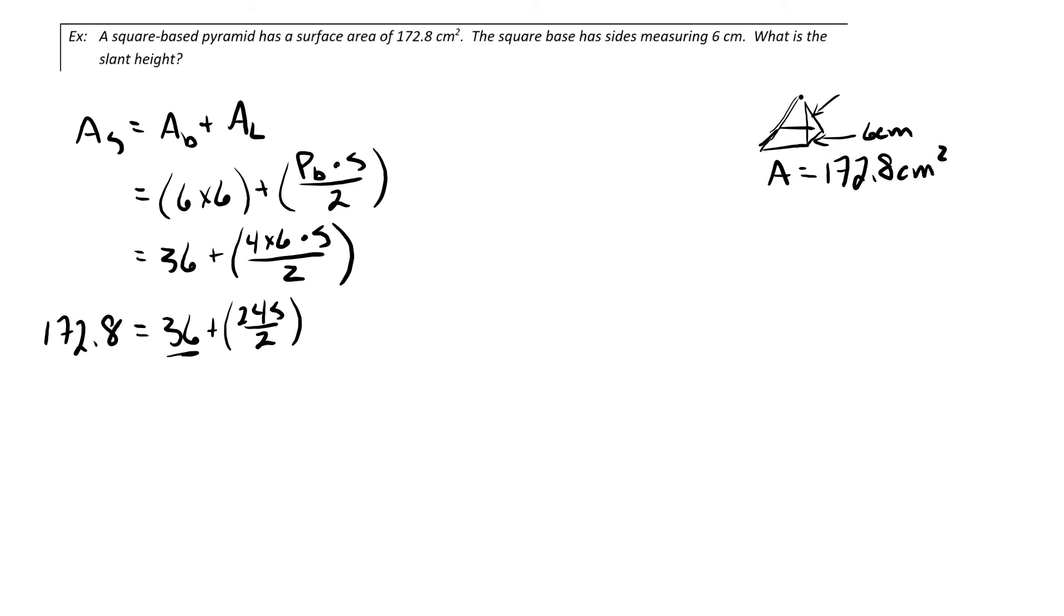To get rid of this 36, I'm going to subtract it from the 172.8, and I get 136.8 equals 12s. Now dividing both sides by 12, I get s equals 11.4.